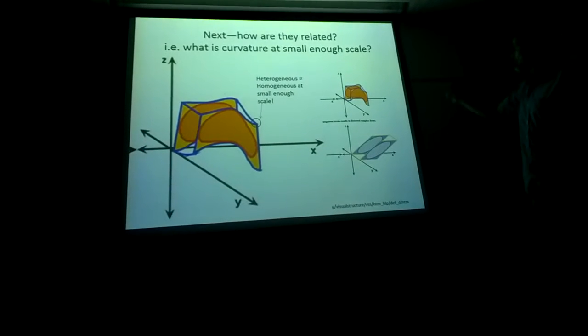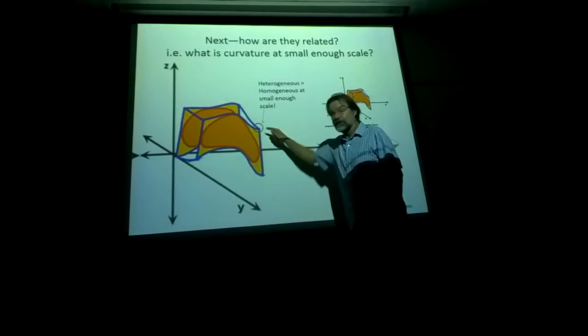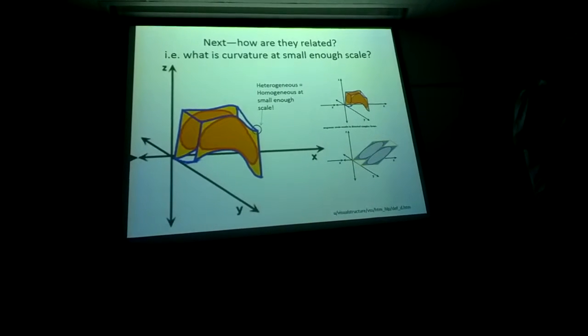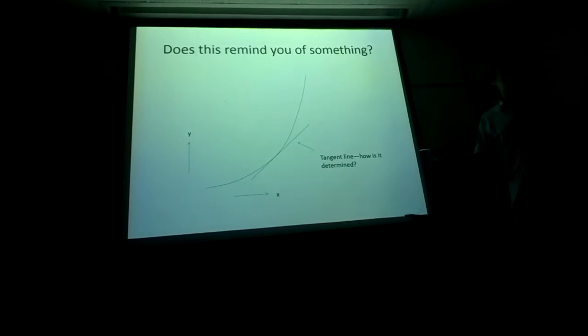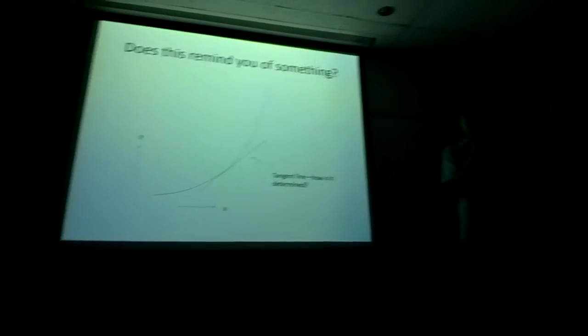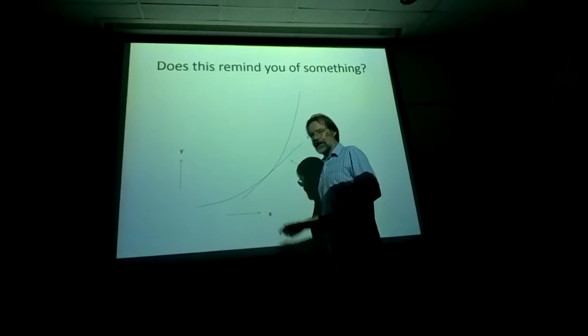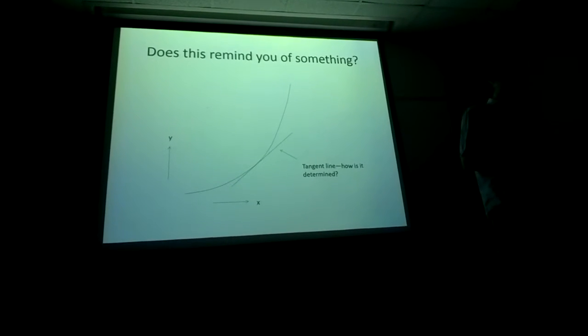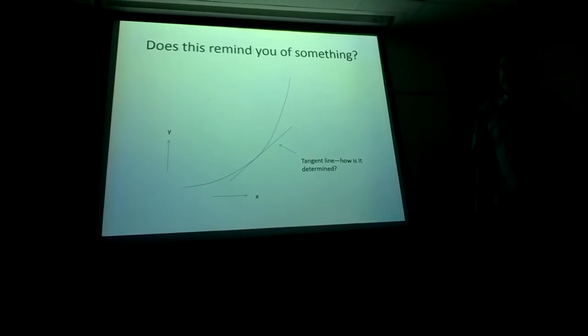So curvature at small enough scale becomes negligible, and curvature becomes a tangent line. So in the limit, as a curved line gets to a small enough scale, the curved line becomes a straight line, and you can deal with this curvature at that scale that way.